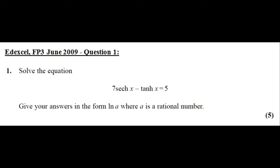Question number one: solve the equation 7 hyperbolic sech x minus hyperbolic tanh x is equal to 5. We need to give our answers in the form ln(A) where A is a rational number.